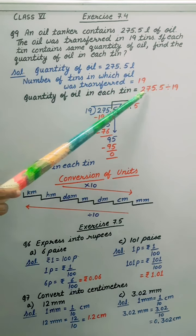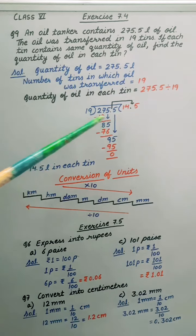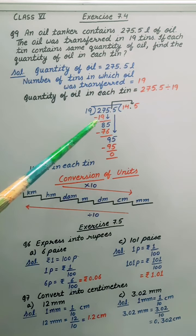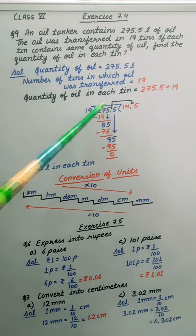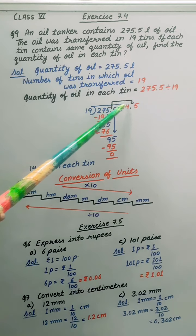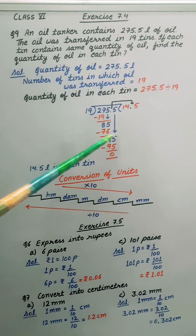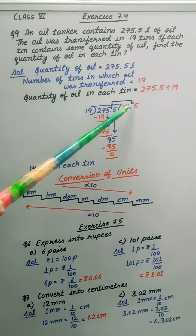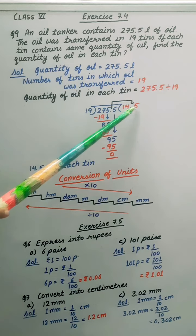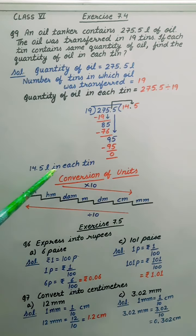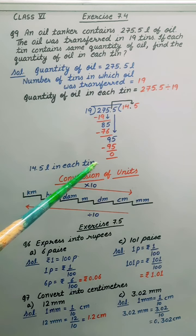275.5 divided by 19. Now let's find out this division. First of all, 19 ones are 19. Remainder is 8, taking 5 down. So 19 fours are 76. On subtraction it is 9. Taking 5 down and this decimal is shifted here. So 19 fives are 95. So answer is 14.5 liter in each tin.